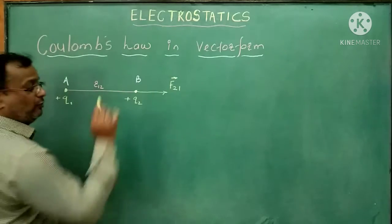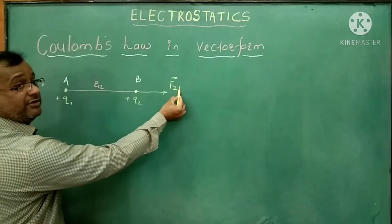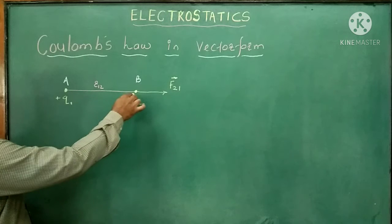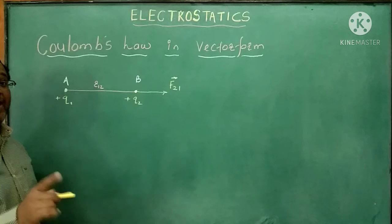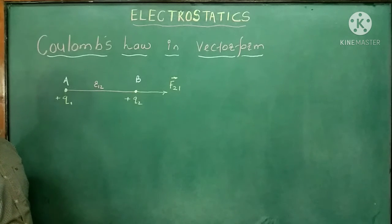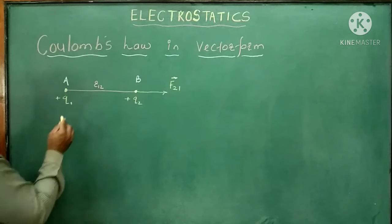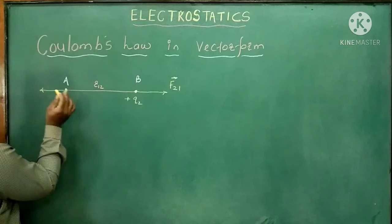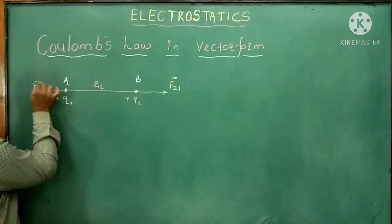F21 stands for the force acting on the second charge by the first one. At the same time, as per Newton's third law — every action has an equal and opposite reaction — the second charge also exerts a force on the first one. The direction of that force is also outward, giving us F12.